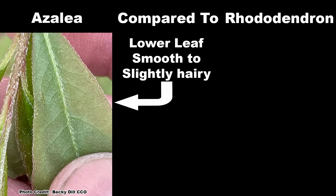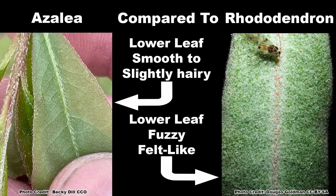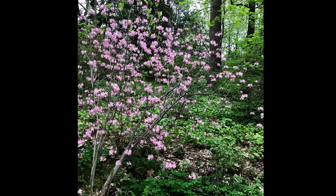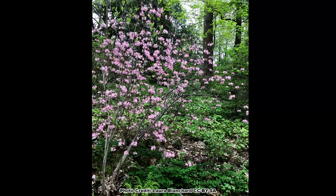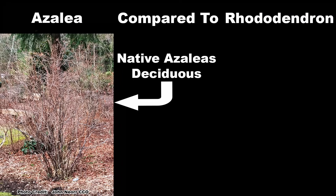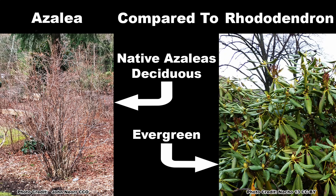The lower surface of azalea leaves are smooth to slightly hairy, especially along the mid-vein and green, and those of rhododendrons have a fuzzy, felt-like texture. The azaleas can be deciduous or evergreen, with our native azaleas being deciduous. Rhododendrons are, for the most part, evergreen.